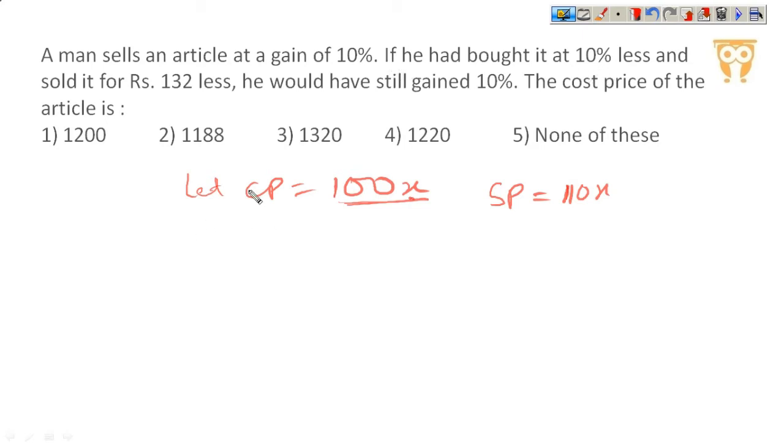If he had bought it, this is a hypothetical scenario. We will call it new CP, 10% less, so 90x. And sold it for Rs 132 less, so 110x minus 132. He would have still gained 10%. We will simply say, new selling price minus new cost price equals 10% of the new cost price.